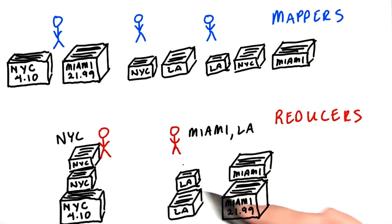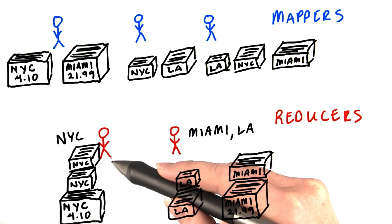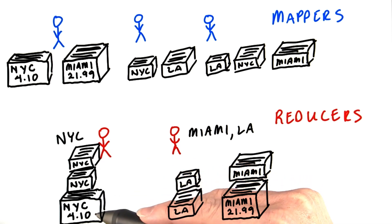Once the reducers have retrieved all their data, they collect all the small piles and create a larger pile. Then they start going through the piles one at a time. All they have to do at this point is add up all the amounts from all the cards in the pile.